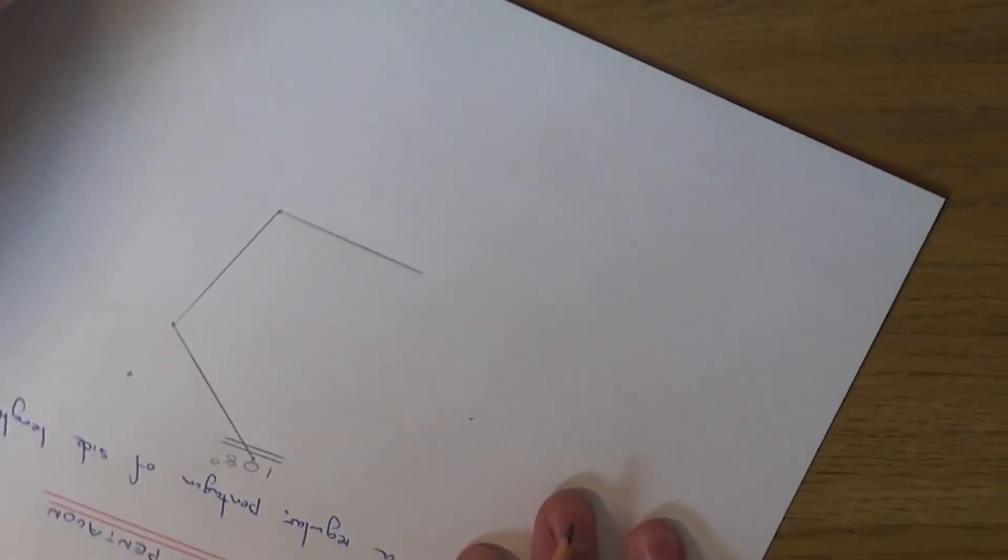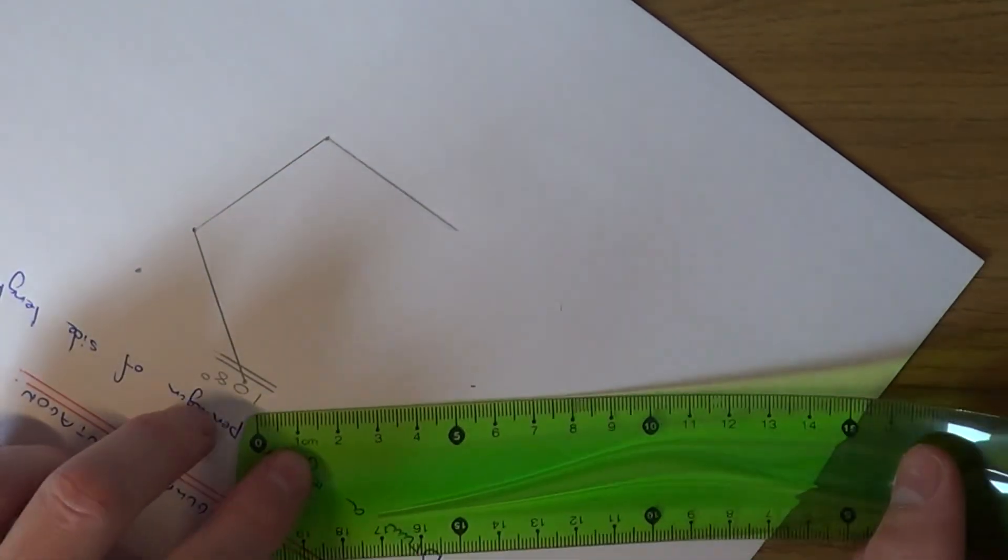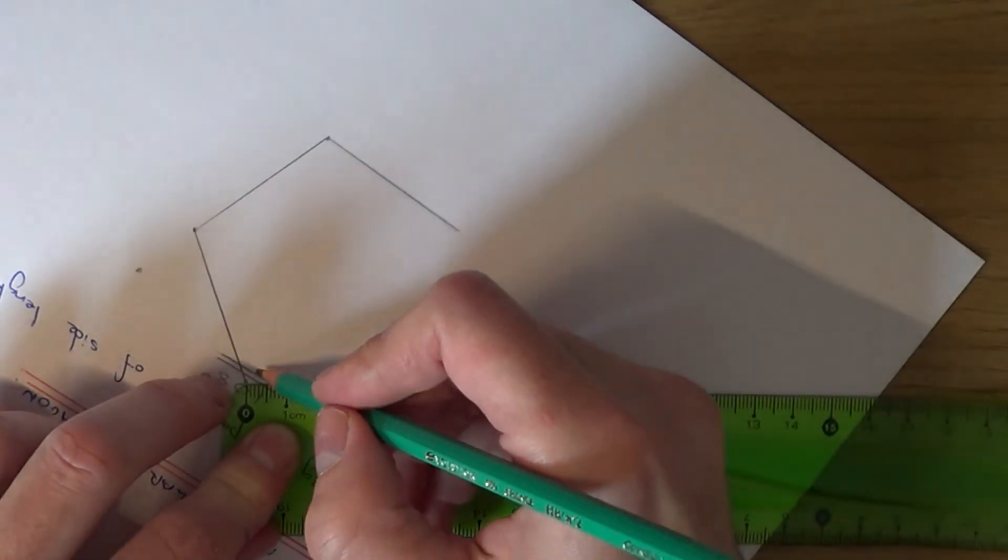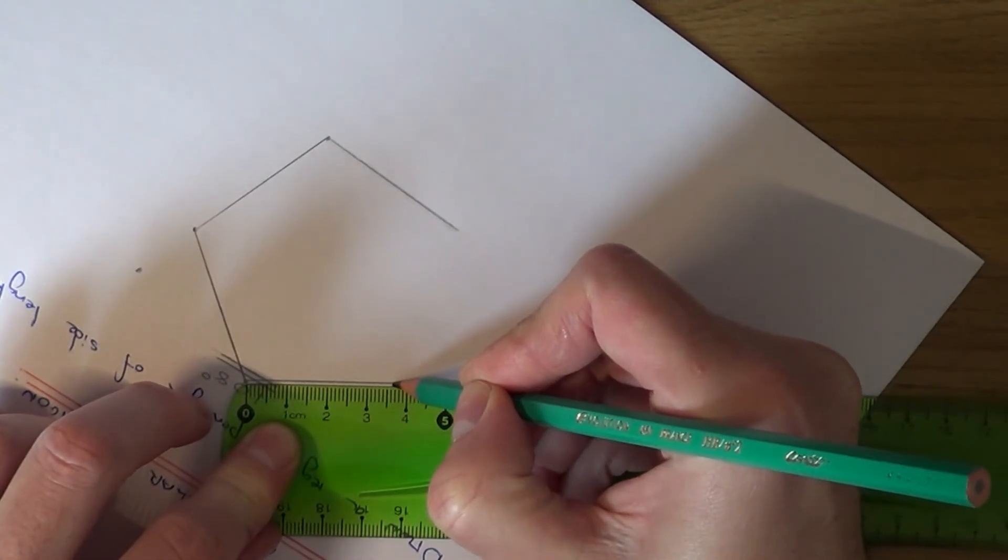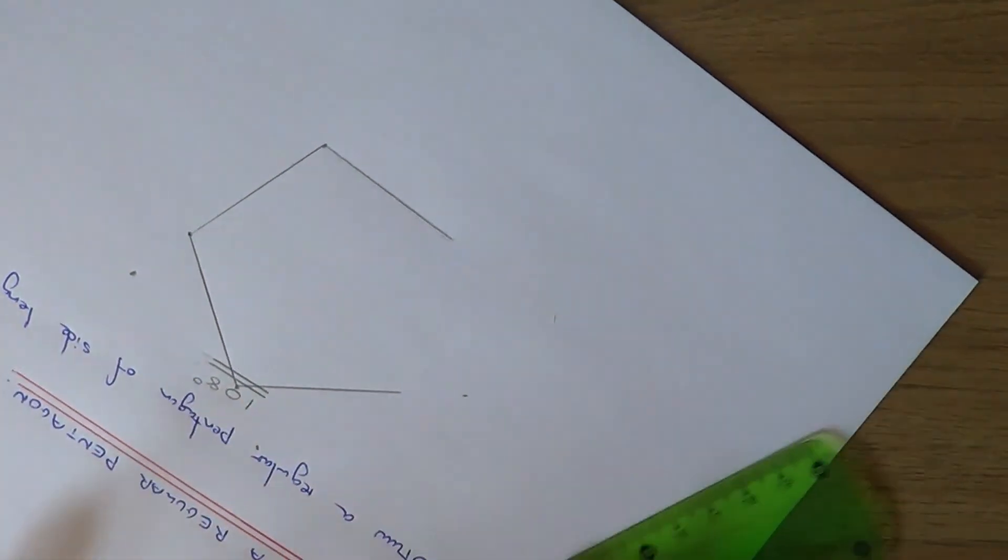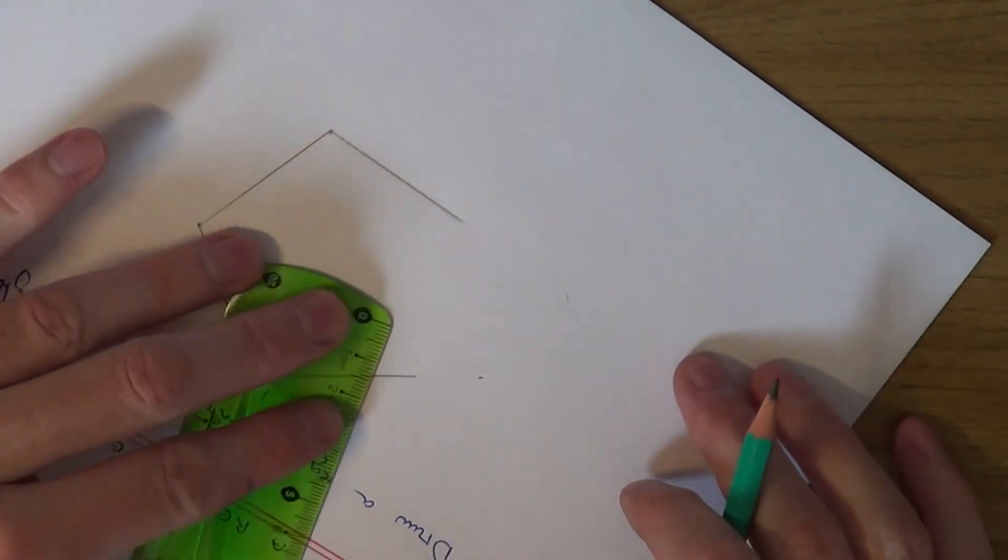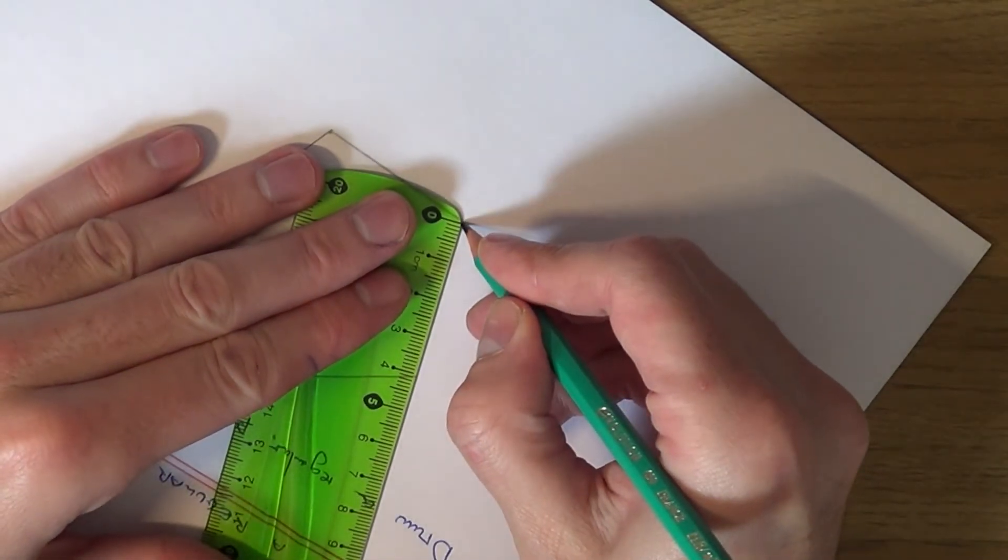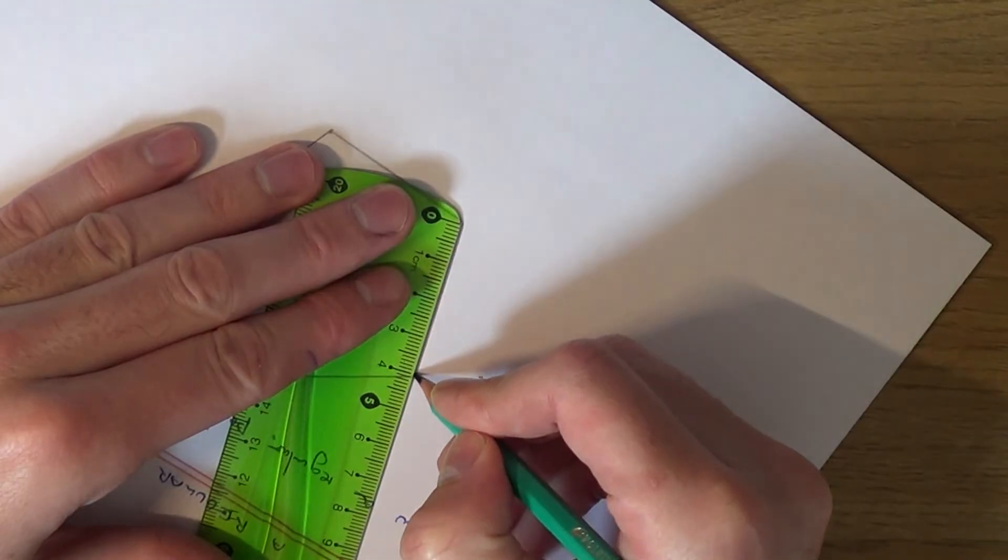So again we've got to make this line four centimetres long. And we just need one more edge now. So we don't have to measure the final edge. This will be four centimetres as you can see.